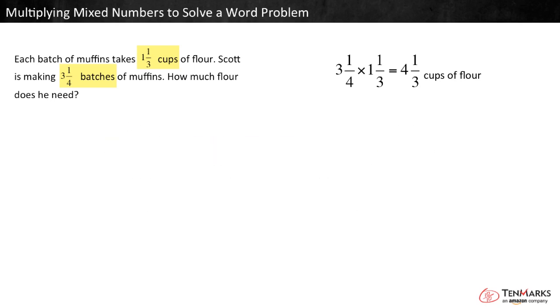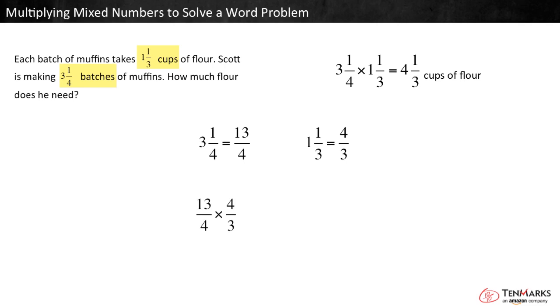Check your work by multiplying with fractions greater than one. Three and one-fourth equals thirteen-fourths. One and one-third equals four-thirds. So you can rewrite the problem as thirteen-fourths times four-thirds.